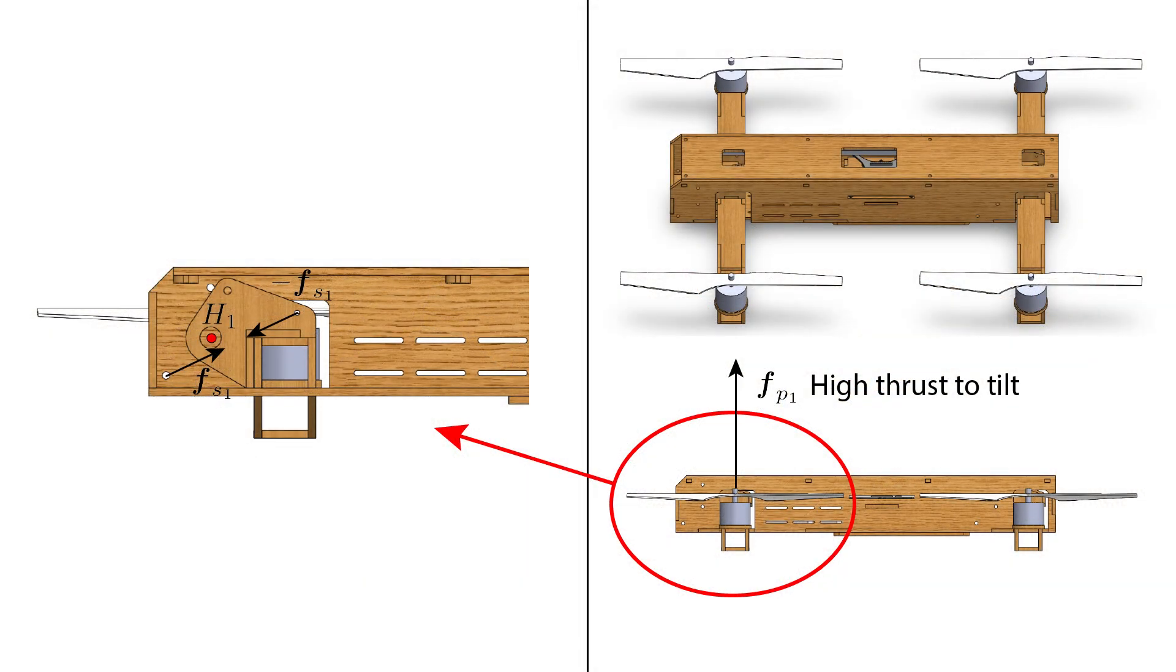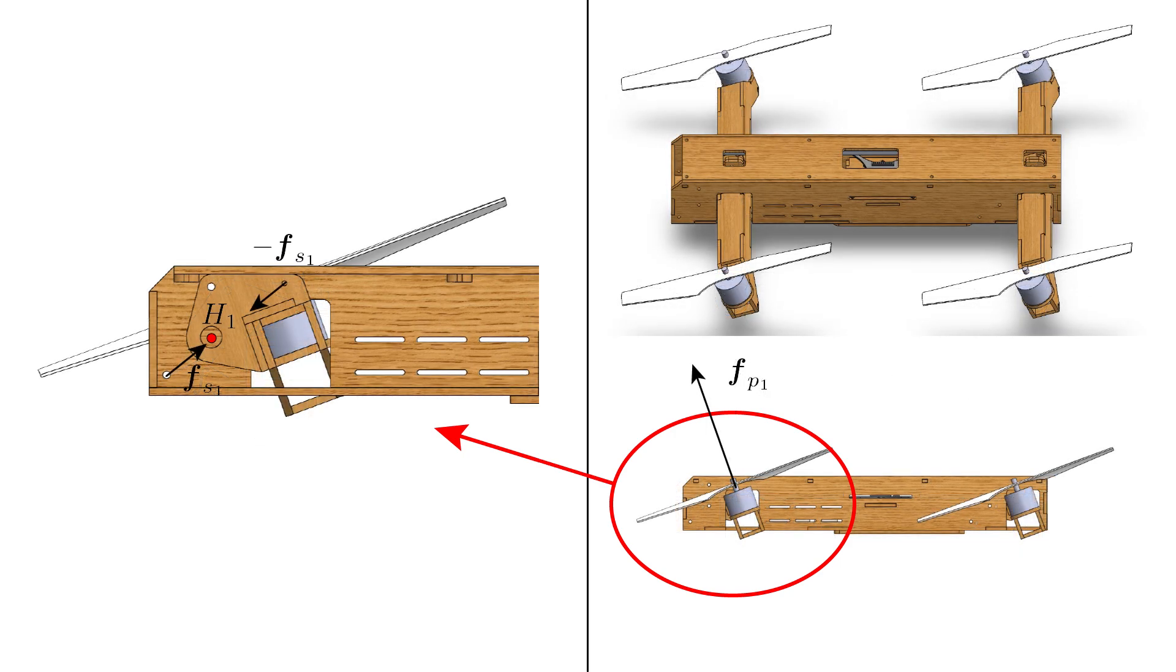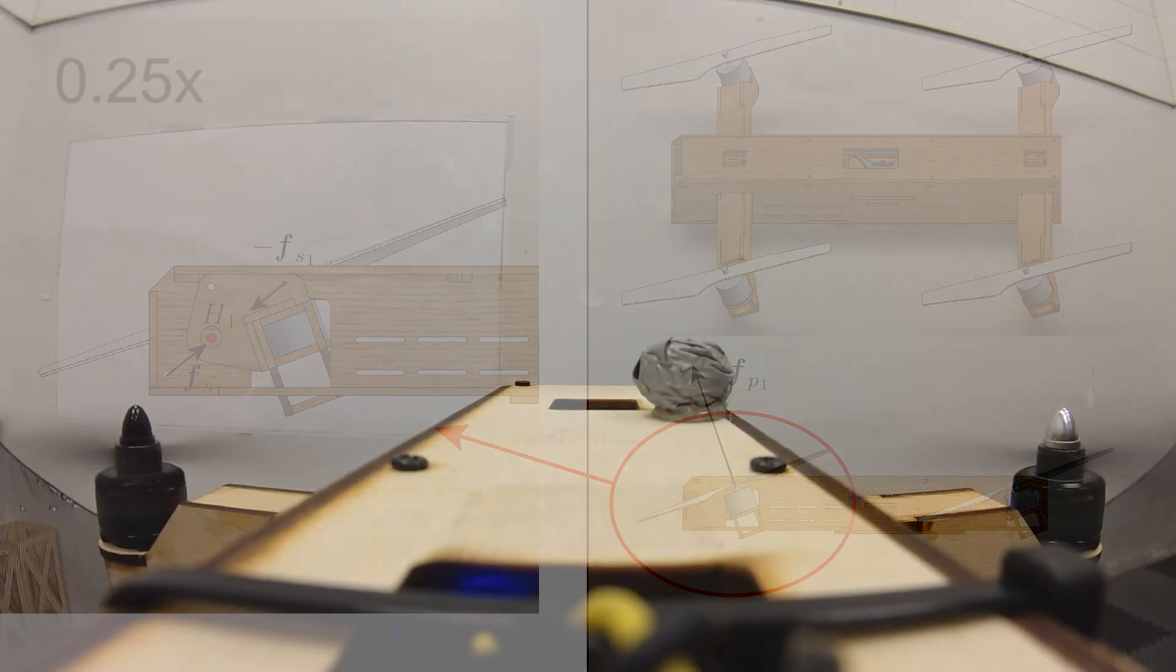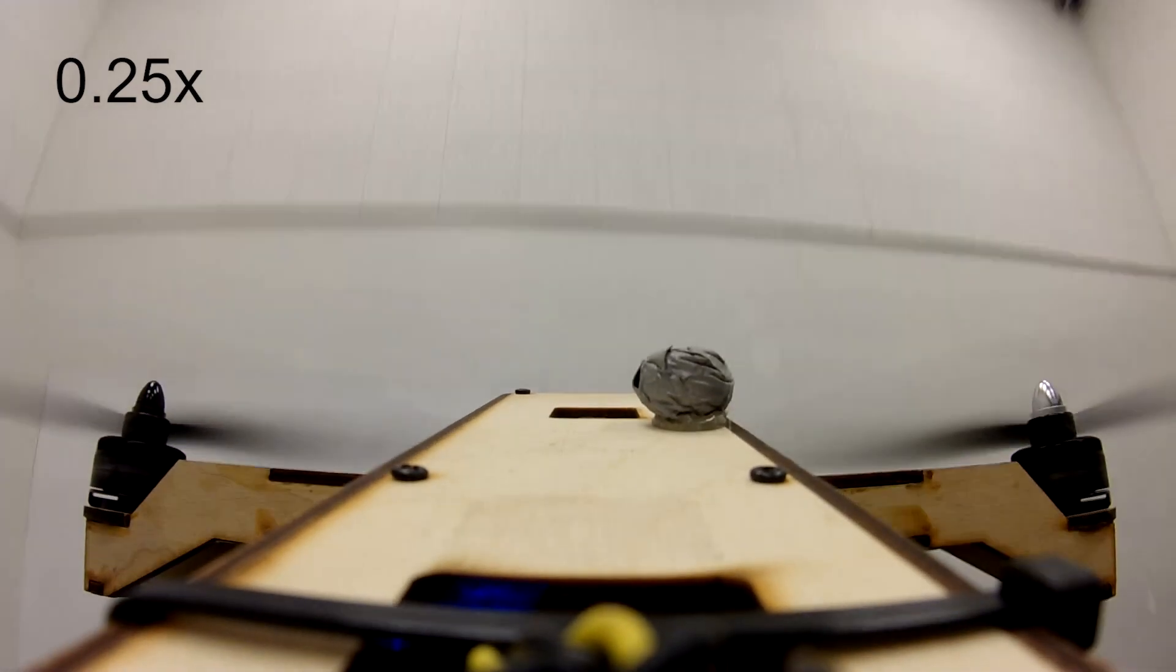The transition between the two configurations is enabled by a tilting mechanism that does not require any additional actuators. A spring is attached near the joint that connects the quadcopter arm to the central body and puts a force on the arm. Once the propeller thrust is high enough to overcome the force from the spring, the quadcopter will transition into the tilted configuration.